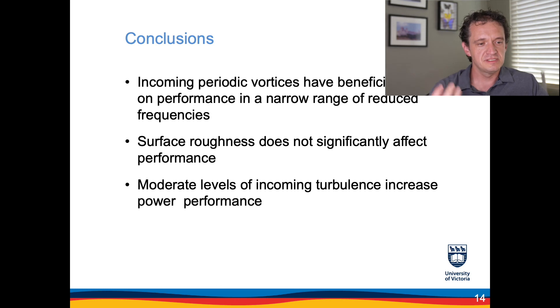So in conclusion, we can say that the incoming periodic vortices can have a beneficial effect on the performance of passively oscillating hydrokinetic turbines but only in a narrow range of the reduced frequencies. This potentially has a positive practical implication that in the arrays of such turbines performance of the downstream blades would not be significantly affected by changes in the reduced frequency in the upstream rows of turbines. On the other hand surface roughness did not significantly affect performance of the passively oscillating foils and in terms of the incoming turbulence levels moderate increase has beneficial effect. With that I would like to thank you for your attention.